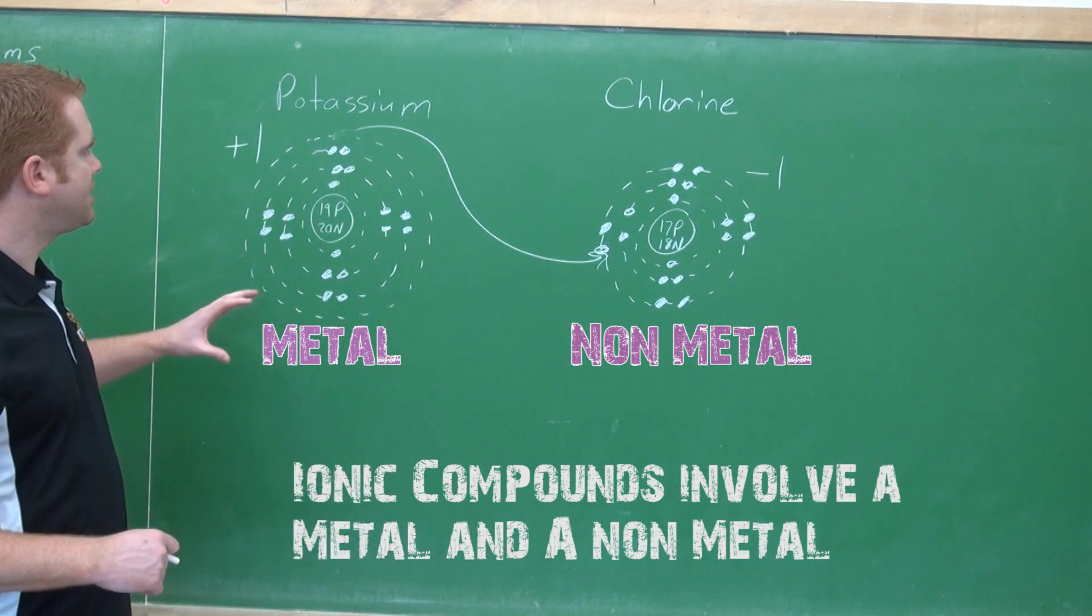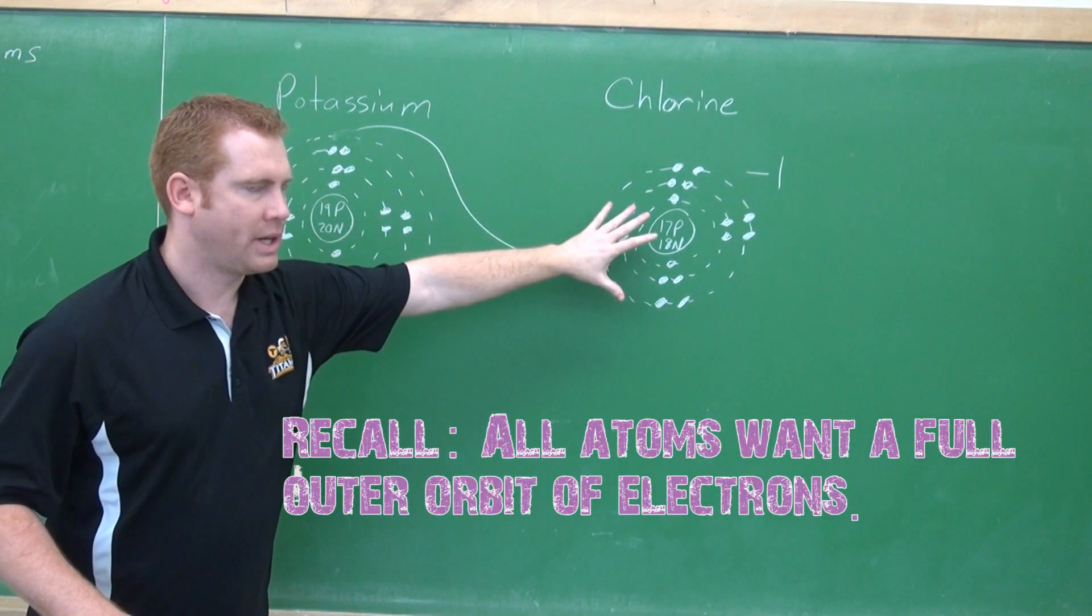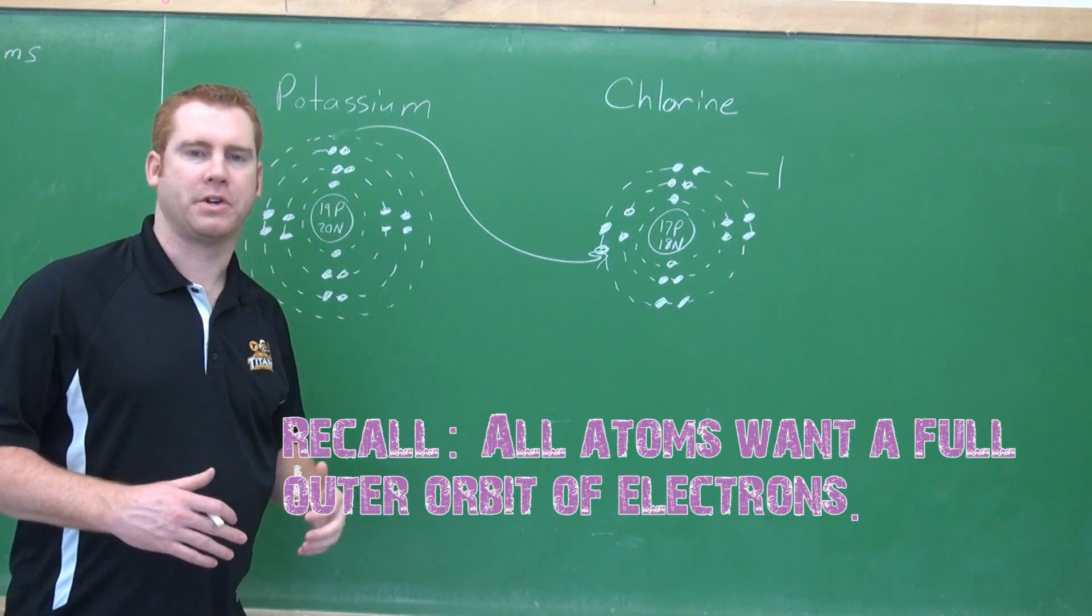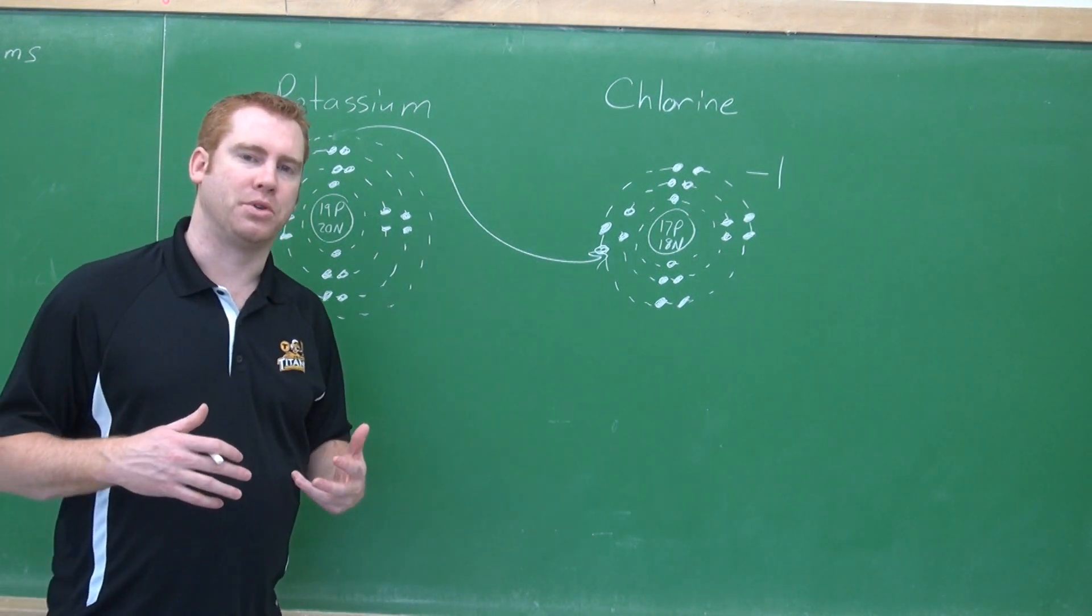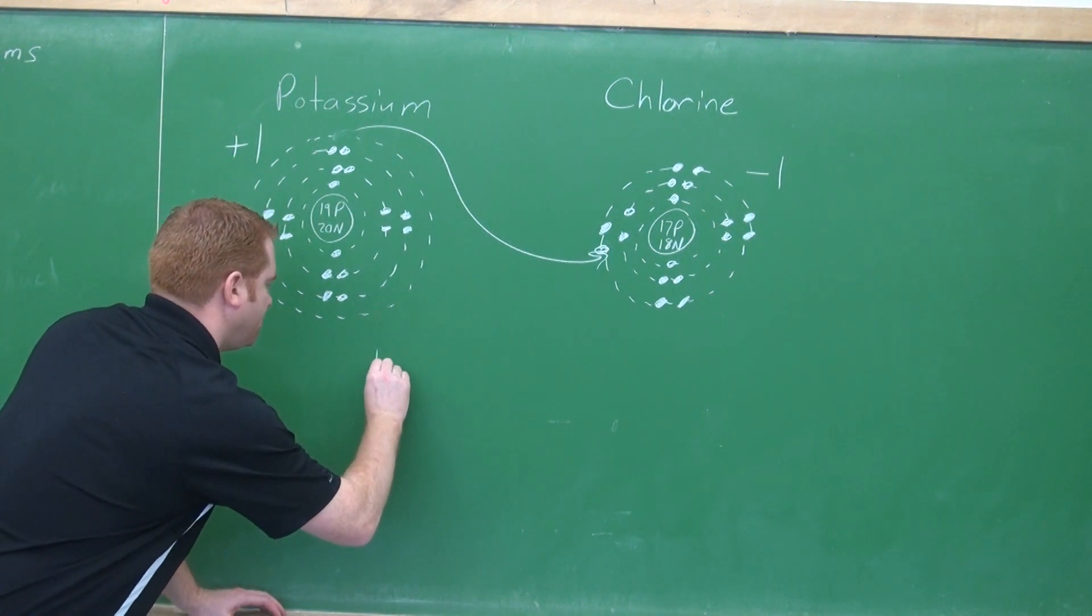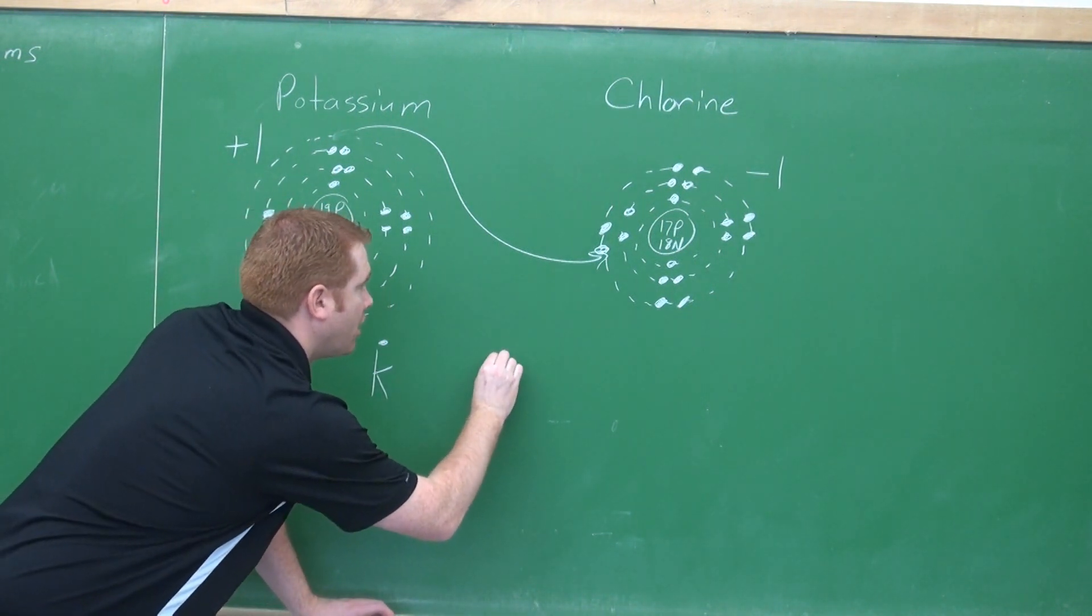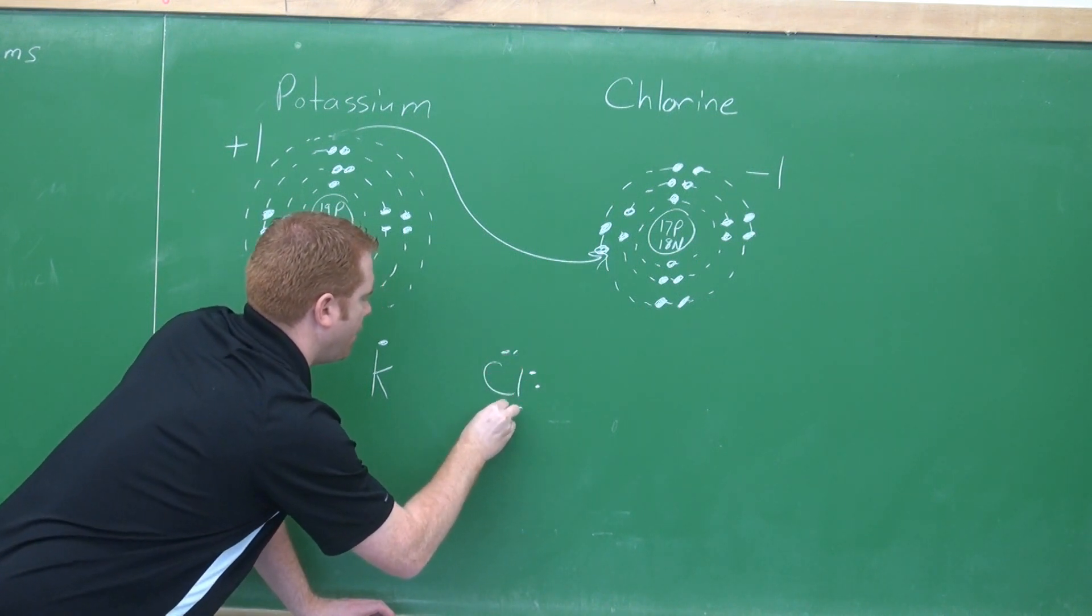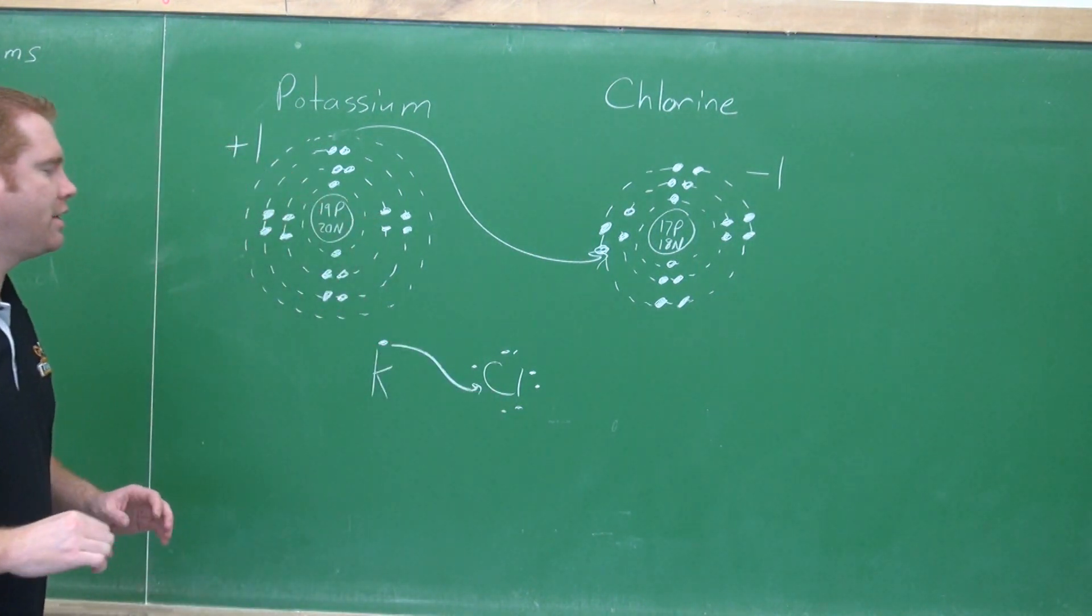In this case here we have potassium. We did this before where it had one valence electron, it wanted to lose that electron. Chlorine had seven valence electrons, it wanted to gain. We said that going through and drawing out the Bohr-Rutherford diagram, which we're very good at now, works, but it would be a little bit easier to do the Lewis dot diagram. Potassium has one valence electron, chlorine has seven valence electrons and therefore wants to gain one, and so we can see the same thing with just sending that over.